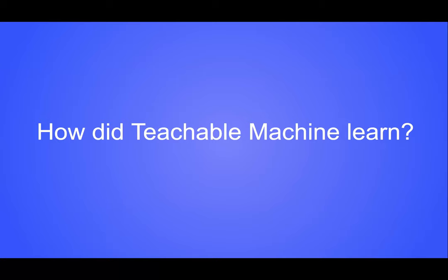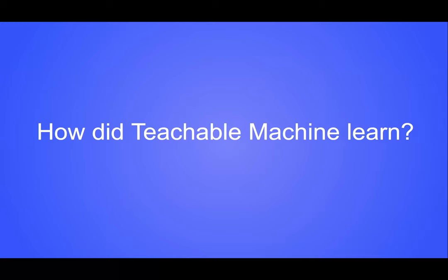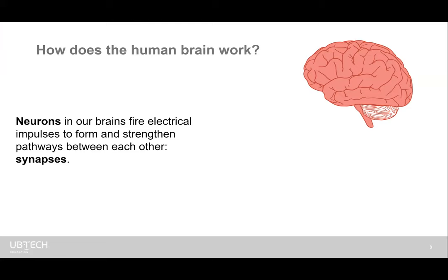A big question: how did Teachable Machine learn? I'm going to explain this as if talking to a small child, giving a high-level overview of how a computer mimics the human brain. The human brain contains neurons—billions and billions of them—that fire electrical impulses when we think. Those impulses travel across pathways called synapses. The more you learn and travel the same path, the more you know it automatically.